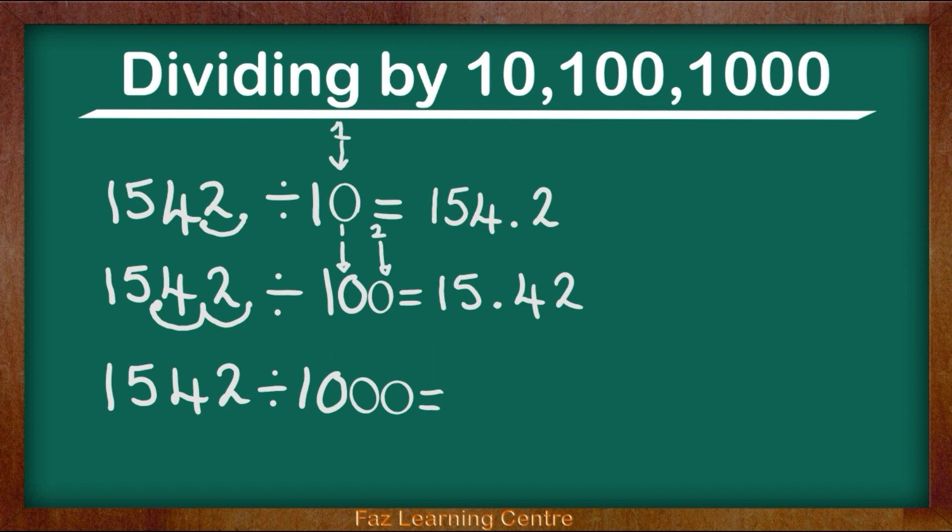So we are going to do exactly the same method that we did for question 1 and question 2. We are first going to bring in a decimal point. Now we are going to think about how many zeros do we have? Yes, we do have 3. 1, 2, 3. So I am moving to my left 3 times.